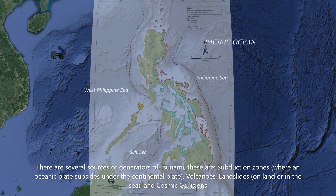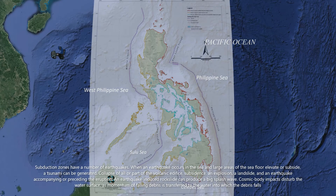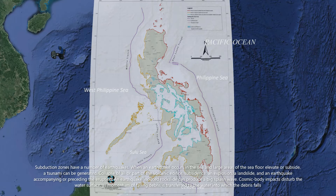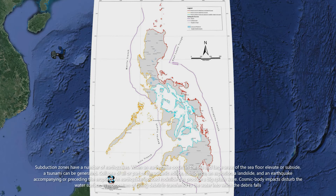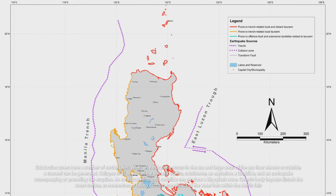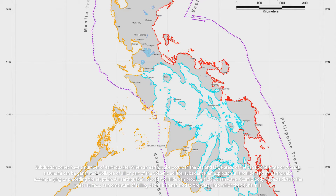The sources or generators of tsunami are: subduction zones, where an oceanic plate subsides under the continental plate; volcanoes; landslides on land or in the sea; and cosmic collisions. Subduction zones have a number of earthquakes. When an earthquake occurs in the sea and large areas of the sea floor elevate or subside, a tsunami can be generated. Collapse of all or part of the volcanic edifice, subsidence and explosion, a landslide, and an earthquake accompanying or preceding the eruption can also generate tsunamis.